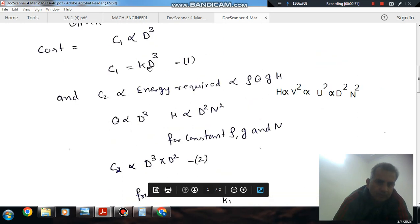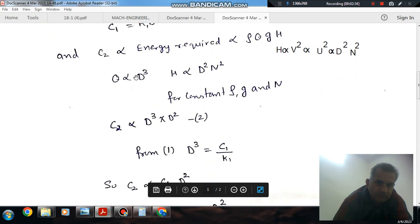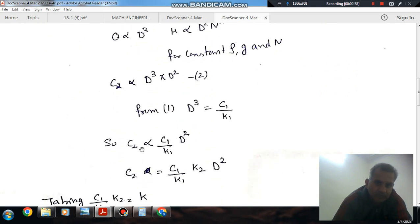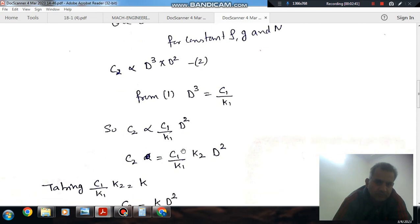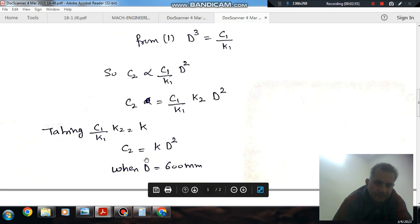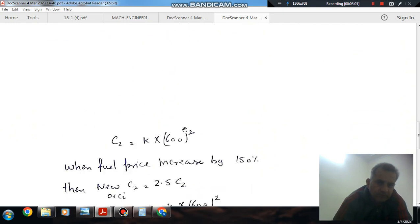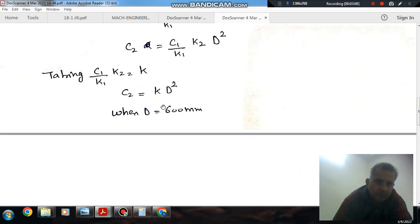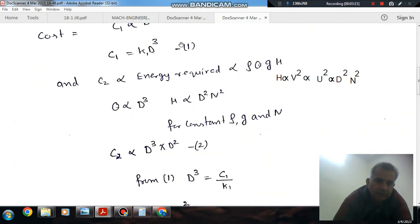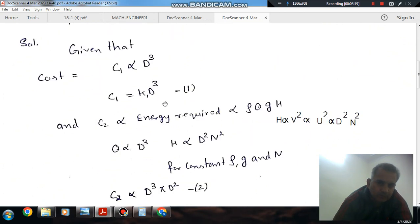Now D³ from equation 1 is C1 by K1, or we can write C2 directly proportional to C1 by K1 times K2 times D². This whole quantity is constant K, so it will be K times D². So now this is constant quantity because K1 is constant, K2 is constant, and C1 is constant after changing the fuel price also because C1 is not affected.